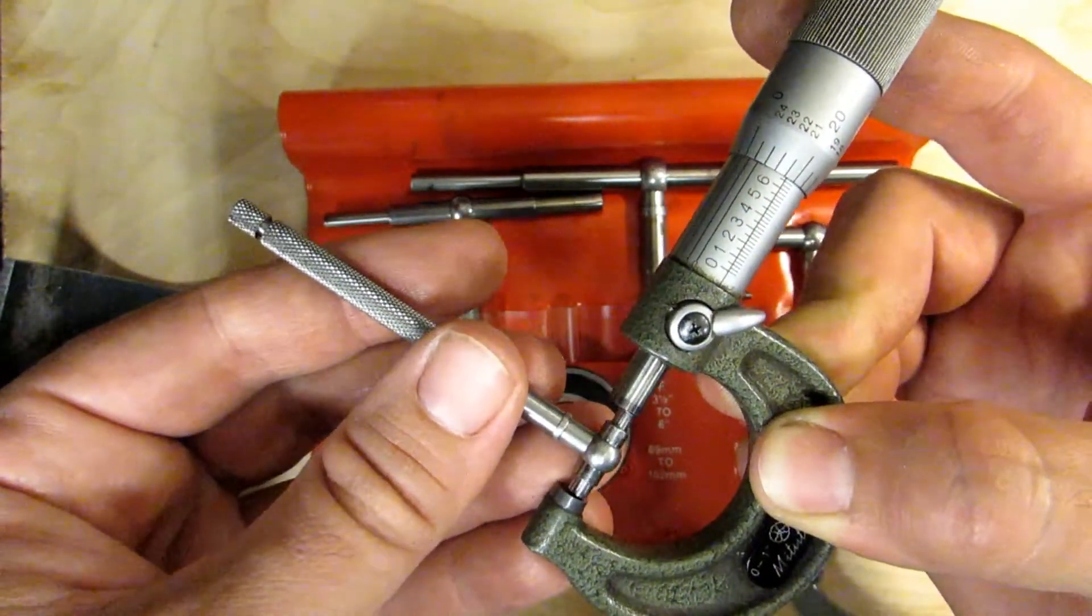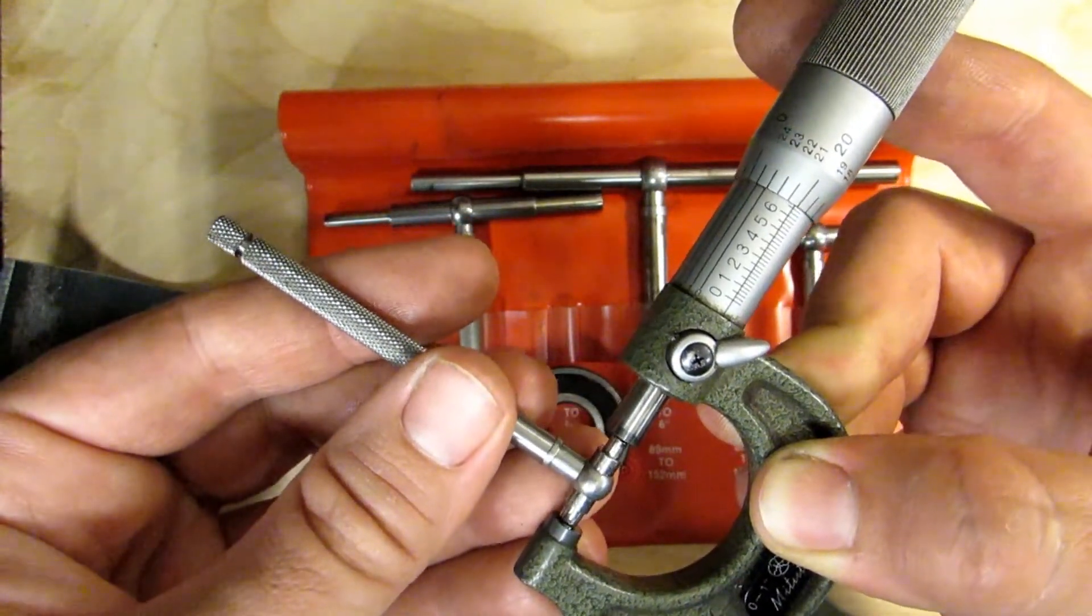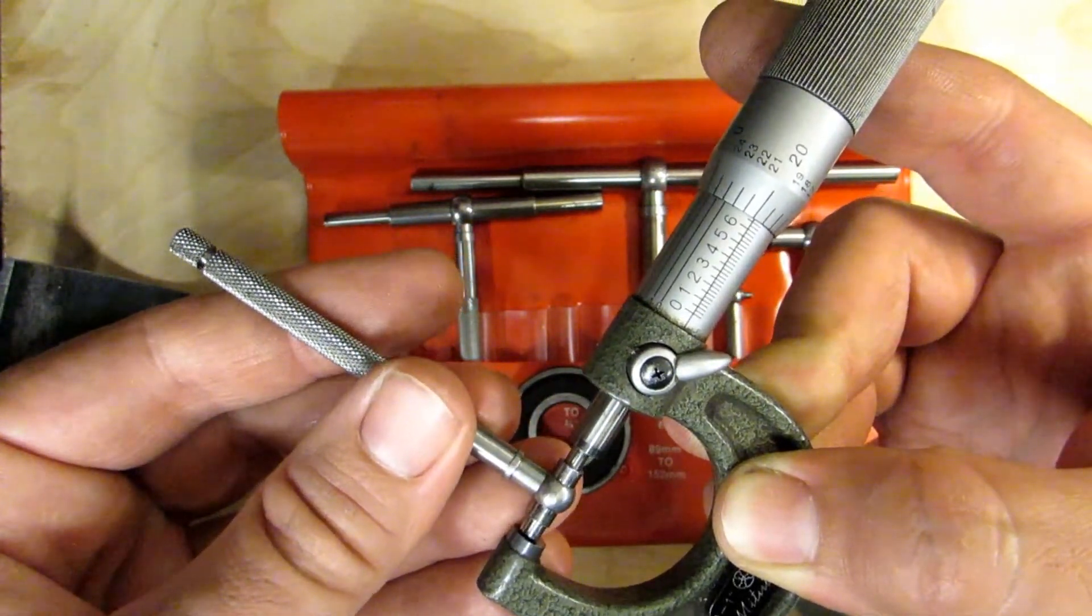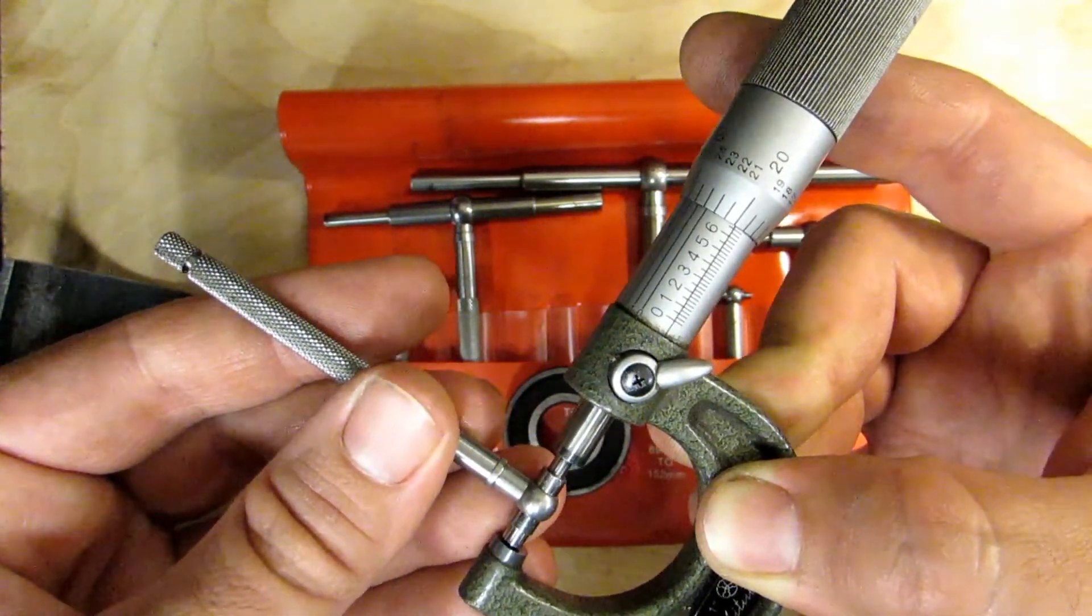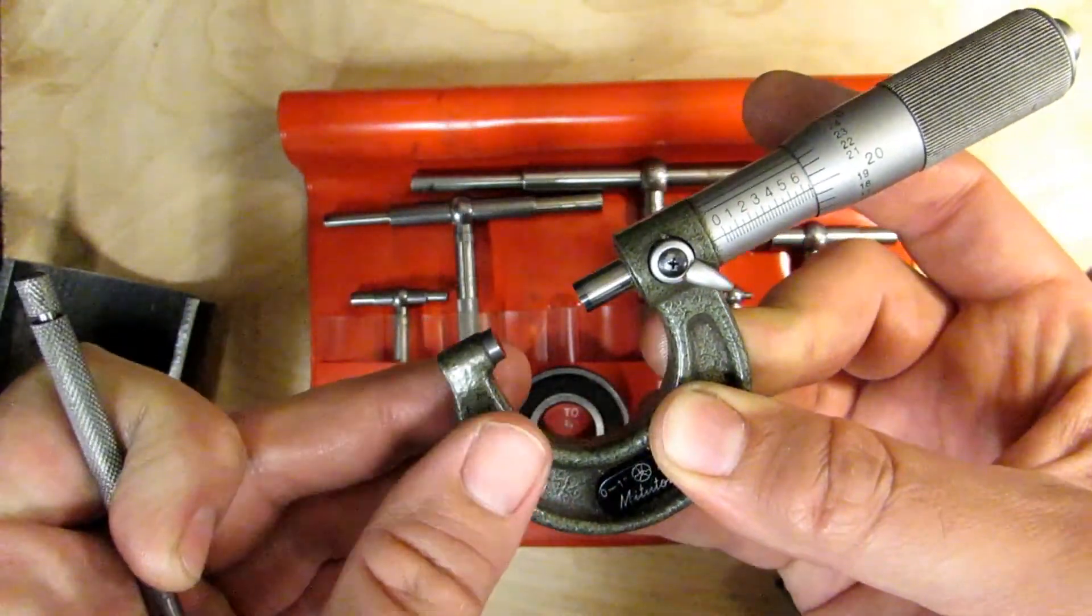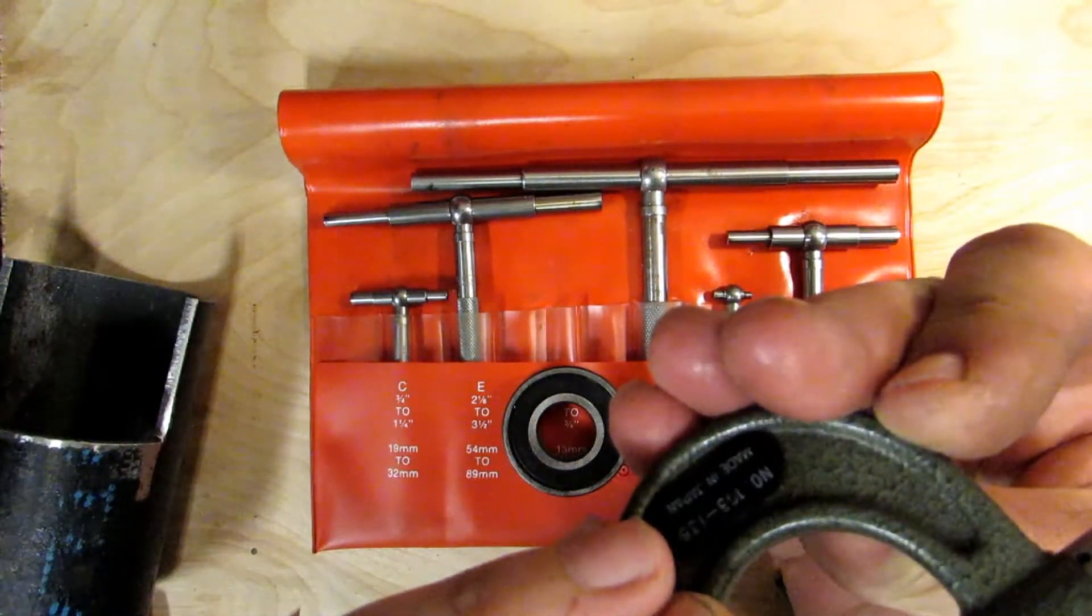It's the same deal, doesn't matter what size micrometer you're using. You still wiggle the head back and forth just like this and slowly move the thimble in. Right there, I'm getting .669 and I'm getting about maybe eight tenths there, yep, eight tenths.